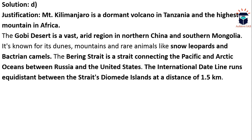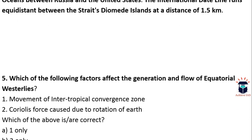UPSC often asks whether the Gobi Desert lies exclusively in Mongolia, so note that it spans northern China as well as southern Mongolia. It is known for its dunes, mountains, and rare animals like snow leopards and Bactrian camels. The Bering Strait connects the Pacific and Arctic Oceans and separates Russia from the United States. The International Date Line runs close to the strait.